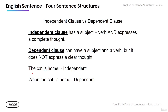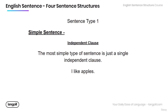Here we have two examples. 'The cat is home' — this is a complete thought, so it is an independent clause. The other one, 'When the cat is home' — that is dependent. That sentence doesn't sound finished; it does not express a clear, complete thought. These are what we mean by independent and dependent clauses. The first sentence structure is just a single, independent clause — the most simple type of sentence. For example: 'I like apples.'